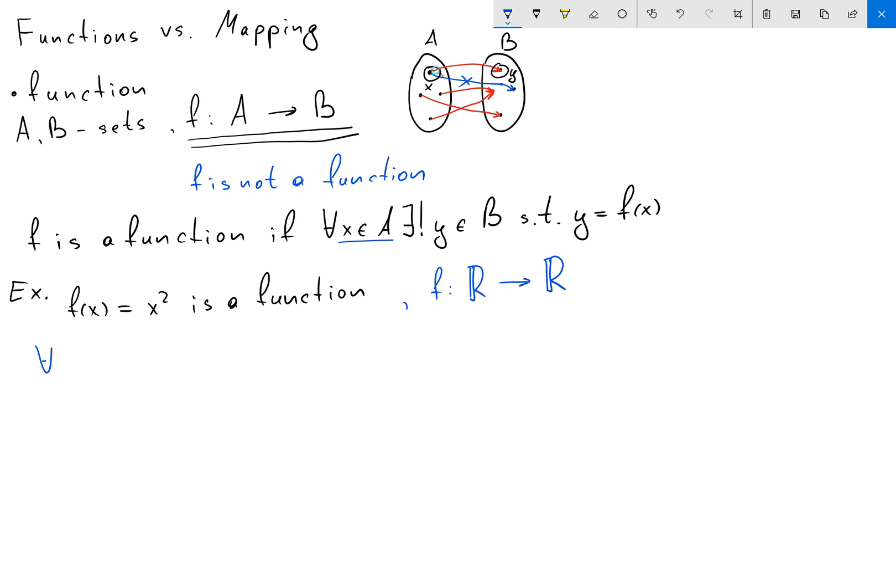Then I want to show that if I'm going to take any element x in ℝ, there exists a unique element y in ℝ such that f(x) equals y. And yeah, you can see indeed this is true.